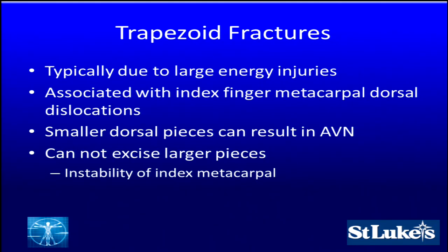Trapezoid fractures are not as common. They're typically due to very high-energy injuries — MVAs, motorcycle crashes, falls from heights. They're usually associated with index finger metacarpal dorsal dislocations, where on a lateral radiograph you'll see that index finger dorsal ridge out the backside. Small dorsal pieces typically do not get a good blood supply and can result in AVN. Larger pieces result in metacarpal instability, but the index finger carpometacarpal joint inserts onto that piece, so you can't just excise it, as it will lead to instability of the index metacarpal with dorsal subluxation, pain with grip, pinch, or general activities.